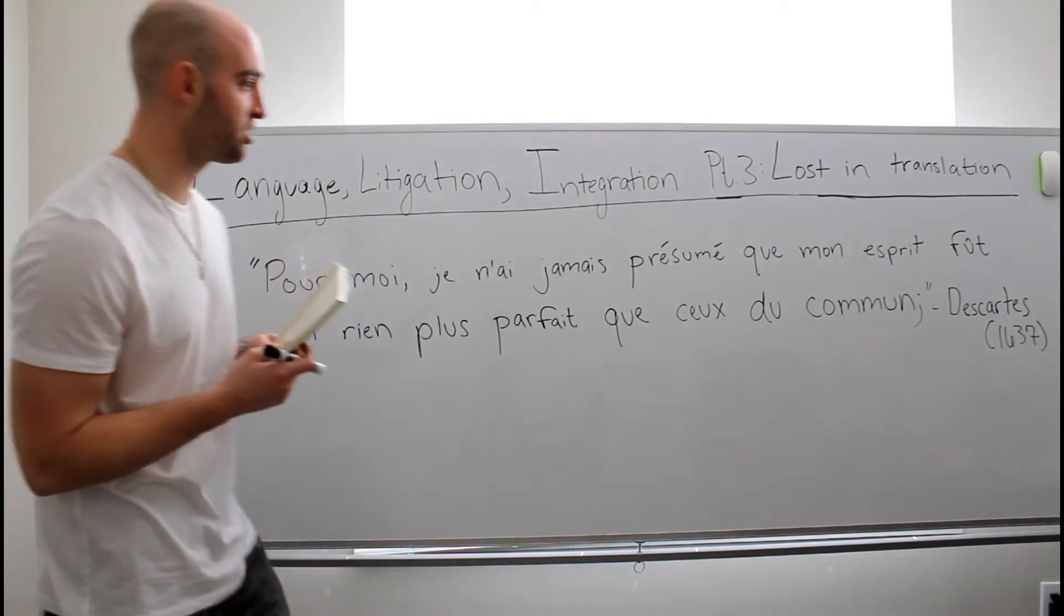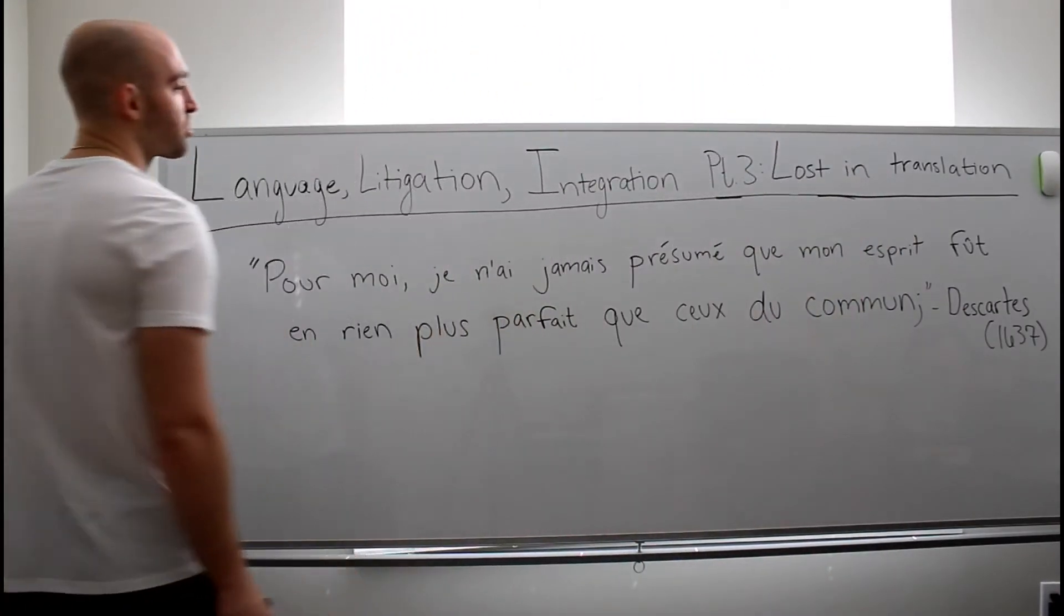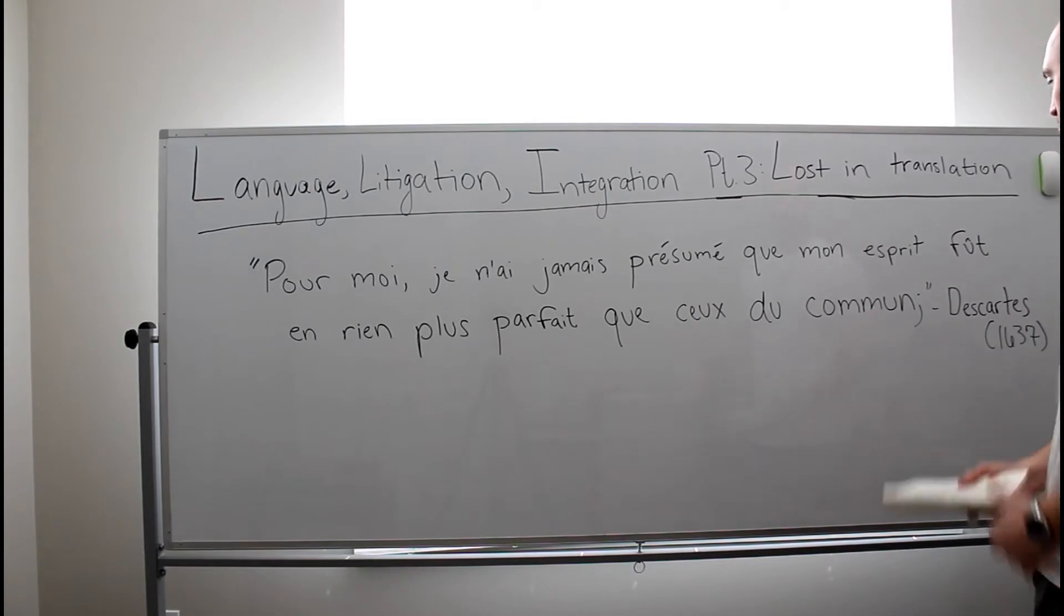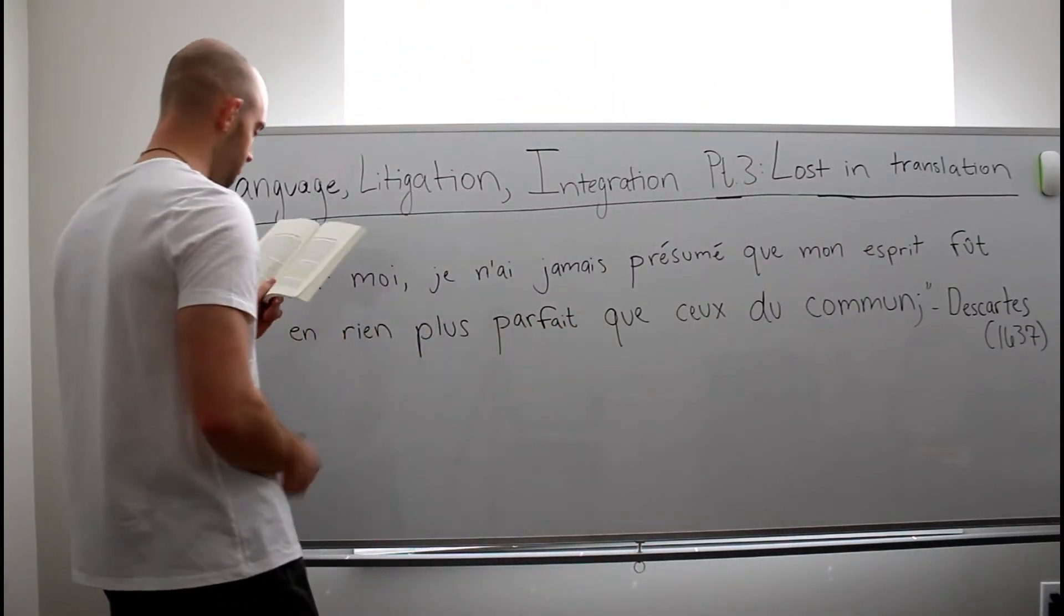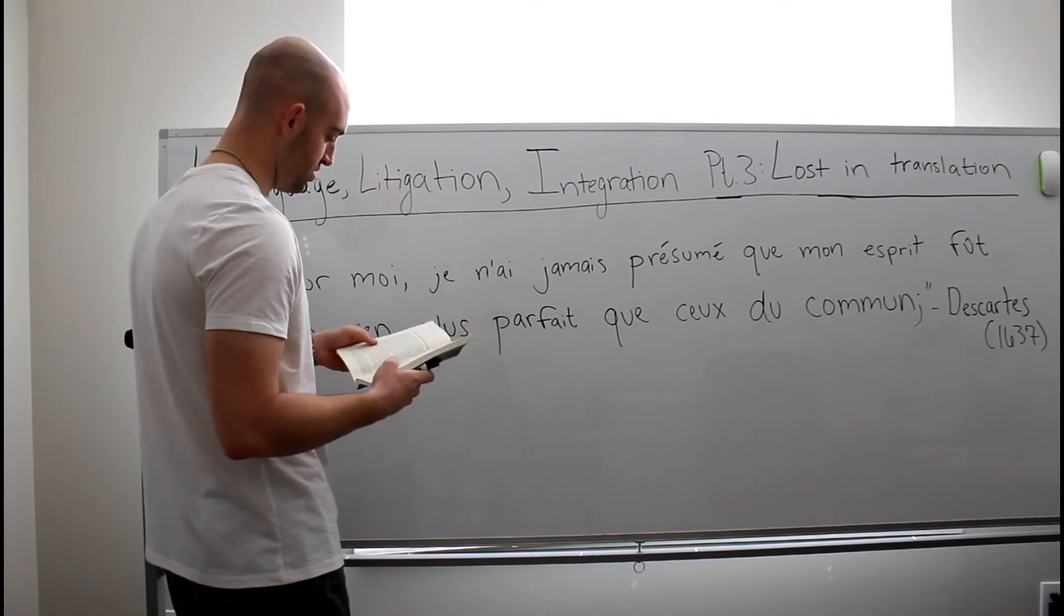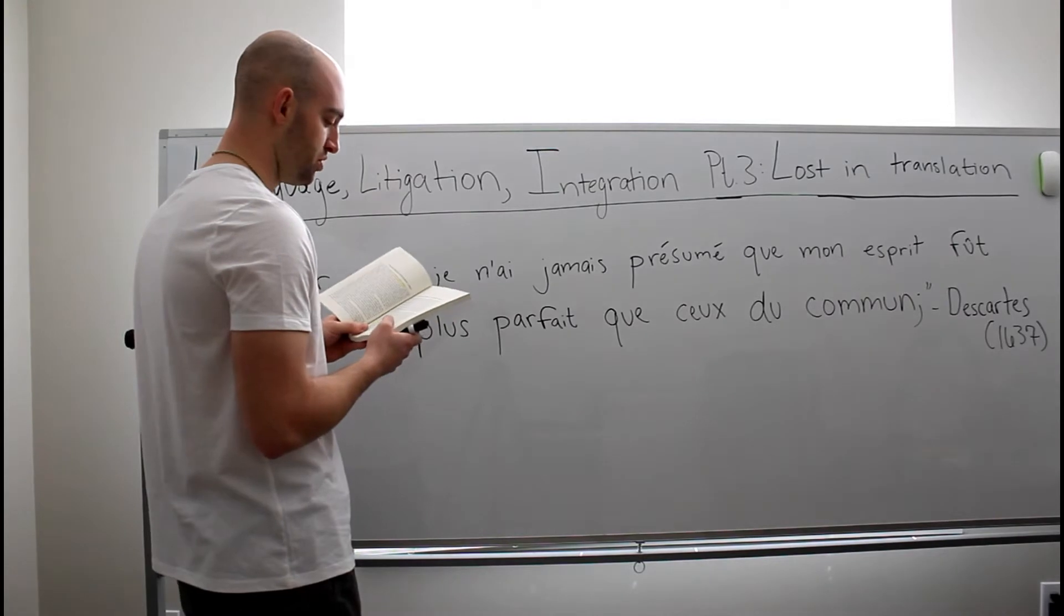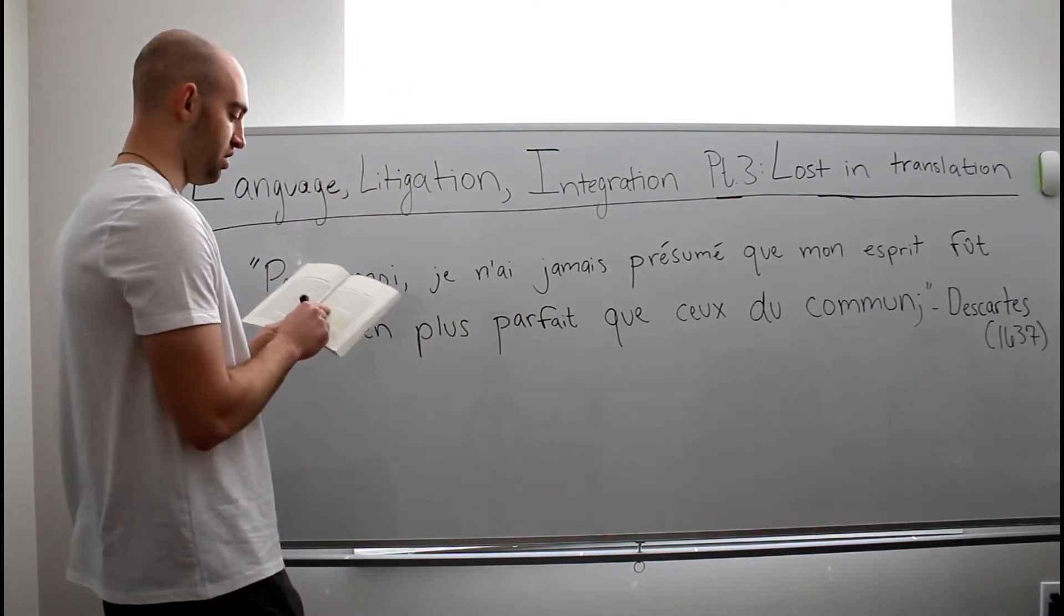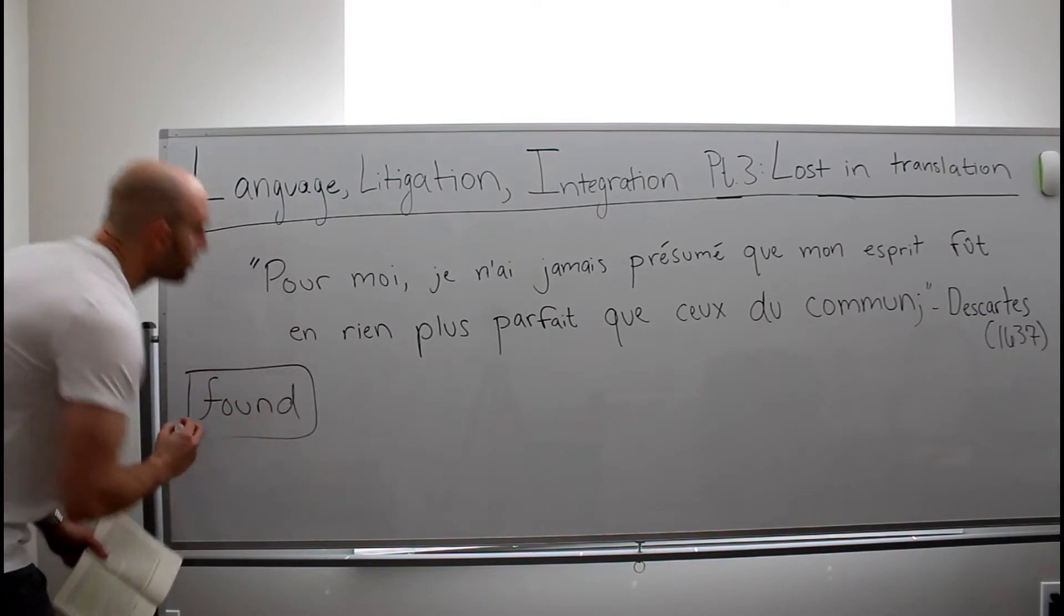So what up here, I just have a quote from Descartes, 1637. It says, Pour moi, je n'ai jamais présumé que mon esprit foute en rien plus parfait que ceux de commune. Commune, commune. I don't know how to say that word. And this is just, again, Descartes was very popular. Très populaire, maybe. But now here is the translation. This is what is written in this book. This is just a French reader book, but Descartes is anywhere. It says, As for me, I have never presumed that my mind was in any way more perfect than those commonly found. I want you to emphasize on found. The word found. I'll just write it up here.